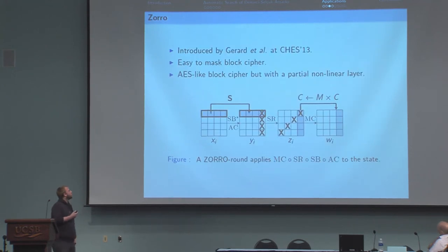Next application: the block cipher Zorro. Zorro is a block cipher based on AES, but the S-box is applied only on the first row at rounds. Zorro was already broken, but we wanted to study the resistance of this design against Demirci-Selçuk attacks.